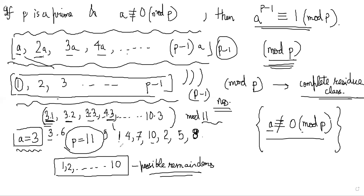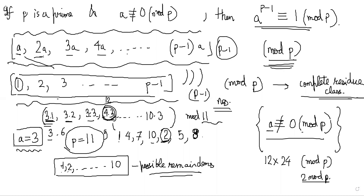Take examples: which element gave remainder 1? 4·3 = 12 ≡ 1 mod 11. Which gave remainder 2? 8·3 = 24 ≡ 2 mod 11. So I'm saying 12·24 will be the same mod 11 as 1·2, which must be 2 mod 11. Let's check: 12·24 = 288, and 286 is divisible by 11, so 288 mod 11 is indeed 2.